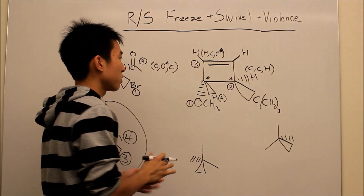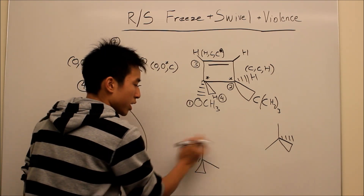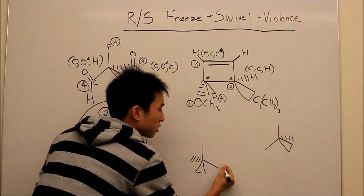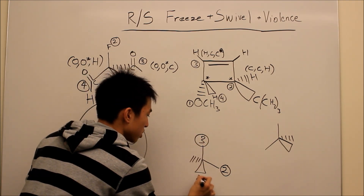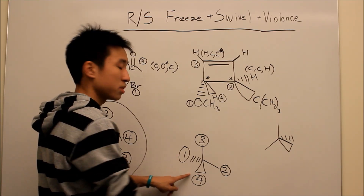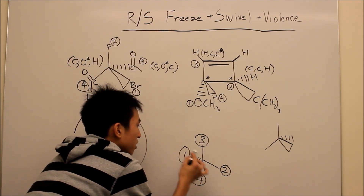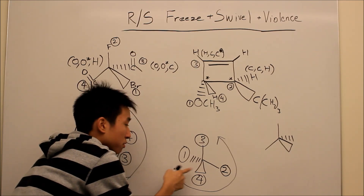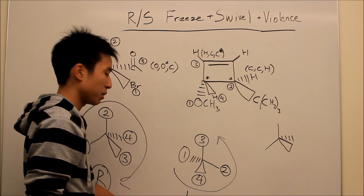Now you need to find the R and S. What I like to do is draw another empty tetrahedral with my two in-plane groups. Just bring down the numbers — you don't want to bring down the entire molecules, it's too hard. Four is wedged, one is in the back. Our lowest priority group is in the front, so whatever we get we just cross it out and get the other one. Going one, two, three — that's counter-clockwise, so it's S. But the lowest priority group is in the front, so it's not S — it's actually R.